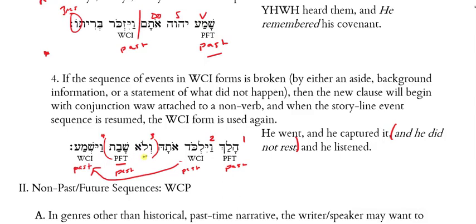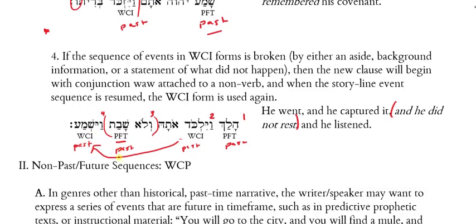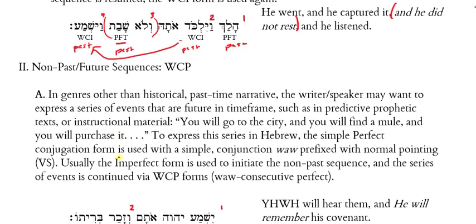I could state what didn't happen as my break in the narrative, or I could do something parenthetical: 'John made hot dogs for lunch and then John ate them — aside: now John was allergic to hot dogs — and then he threw up.' He did this, he did this, parenthetical information, and then resume with WCI. That's the way Hebrew does narrative: mainly through kicking off the narrative with a perfect and then following it up sequentially with WCI forms in past time.